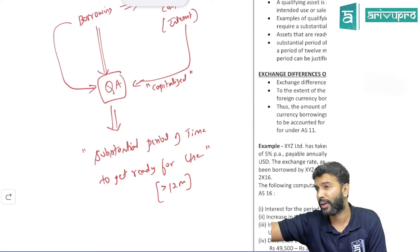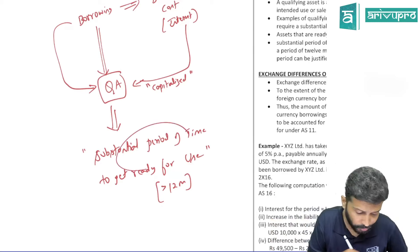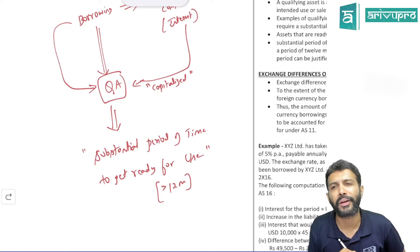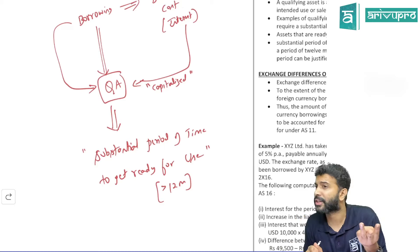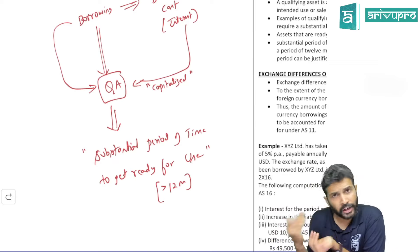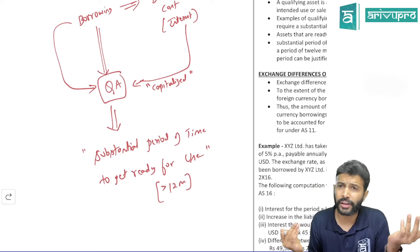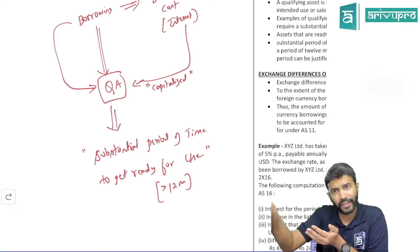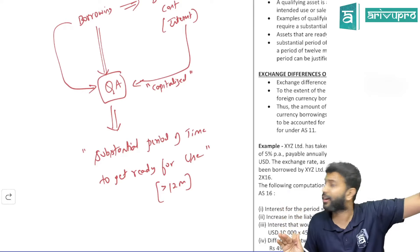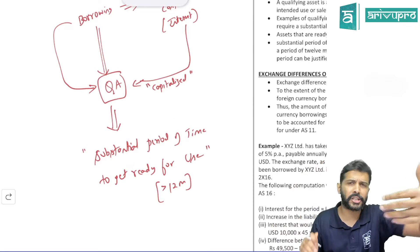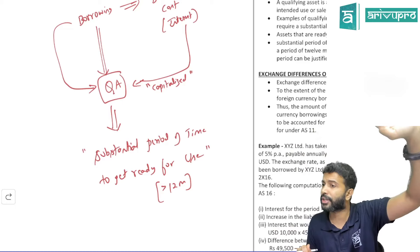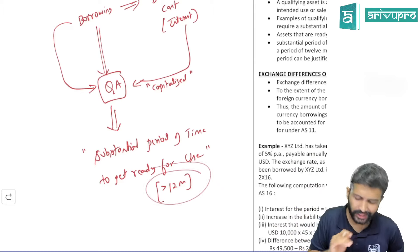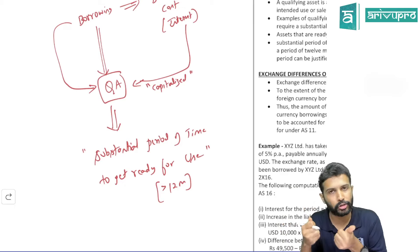AS 16 does not give any specific number of months — it says it is management discretion. Who took the loan? The company. Who is deciding for what purpose the loan is utilized? The company. So substantial period of time should also be defined by management, because for some company three months is substantial, for some company 10 months is substantial. IFRS says substantial period of time is left to management decision — even three months could be substantial. The accounting standard ordinarily takes the benchmark to be 12 months but also says lesser period is accepted if you can justify it.